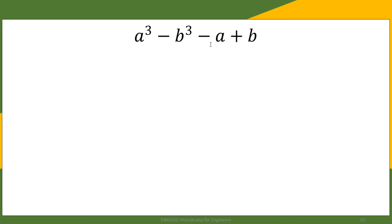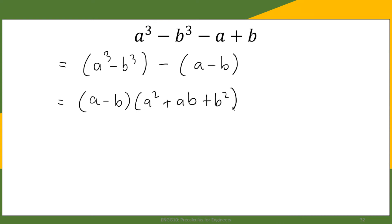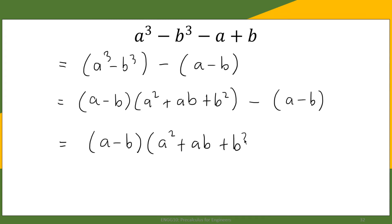For the final example: a cubed minus b cubed minus a plus b. We group a cubed minus b cubed and then, since this is minus, the second group becomes a minus b. The first group is a difference of two cubes, which factors as (a minus b)(a squared plus ab plus b squared). Since a minus b is a common factor to both groups, we factor it out, leaving a squared plus ab plus b squared minus 1. That is the complete factored form.